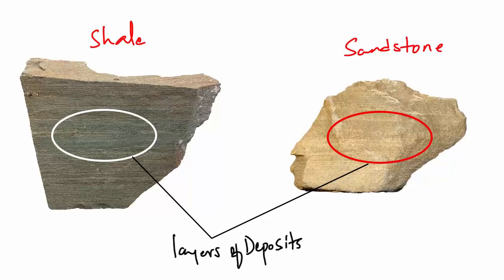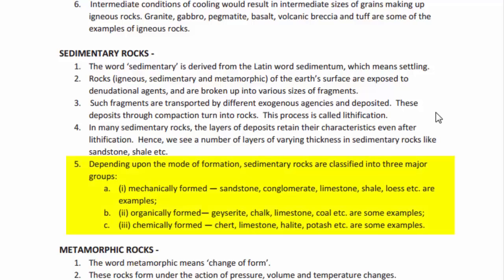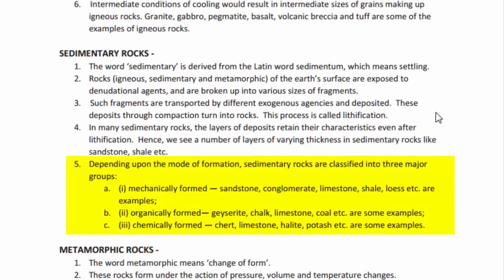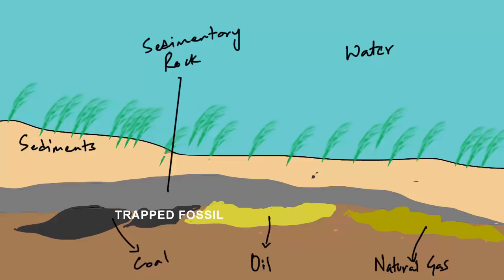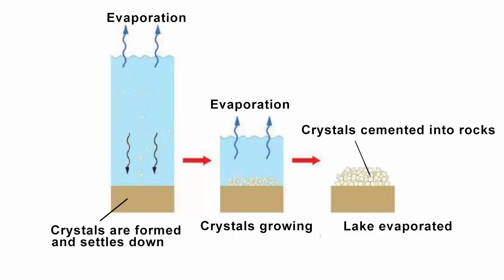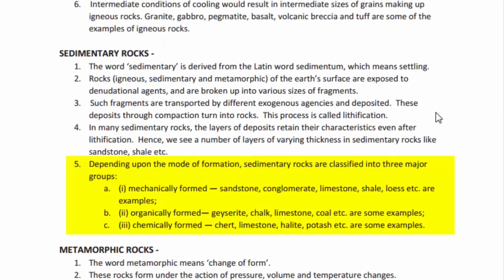Depending upon the mode of formation, sedimentary rocks are classified into three major groups. First, mechanically formed — rocks that weather down into tiny soil debris and reform through accumulation and compaction. Second, organically formed — rocks formed from organic debris such as leaves, roots, and plant or animal material; limestone and coal contain fossils and are organically formed. Third, chemically formed — rocks formed due to precipitation of minerals from water, such as halite, potash, and limestone formed by evaporation of seawater millions of years ago.